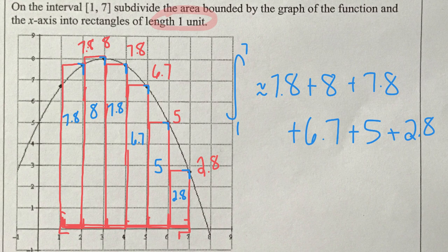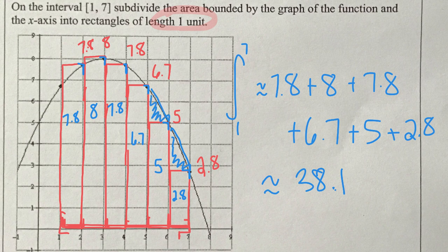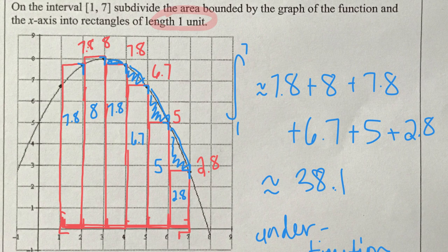Adding 7.8 + 8 + 7.8 + 6.7 + 5 + 2.8, all the areas from left to right, gives us approximately 38.1. This is probably an under-estimation — we're missing area below the curve on the right side. We could take the average of the left-hand sum (42) and right-hand sum (38.1) as a better approximation, but today we're just doing left-hand and right-hand sums.